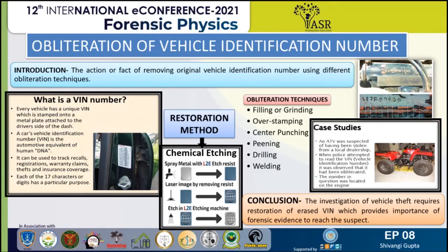I have also mentioned a case study about a local dealership involving a tractor that was stolen and recovered through obliteration technique. Through this technique, the VIN was found on the engine of that vehicle. Upon investigation, it was confirmed to be that particular vehicle's identification number.